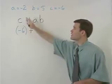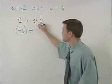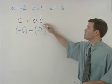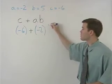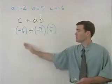We have plus A, which is negative 2. So we're going to replace this A with a negative 2 in parentheses. B is 5, so we replace the B with a 5 in parentheses.